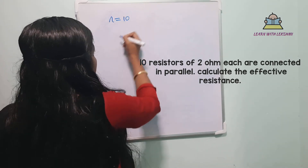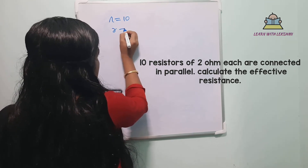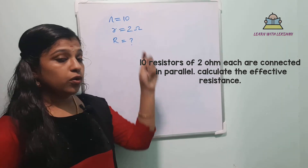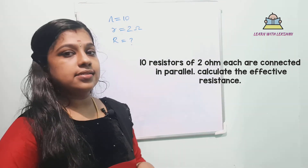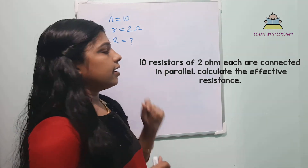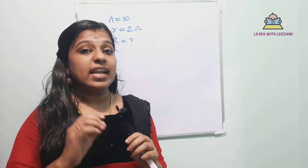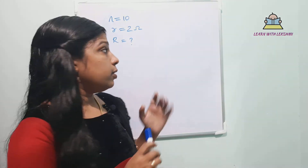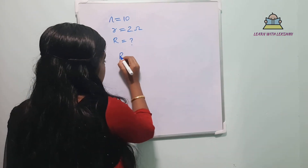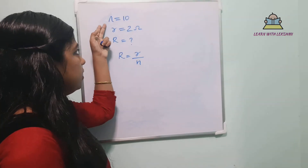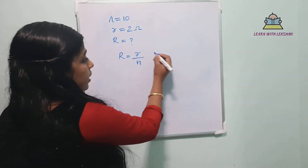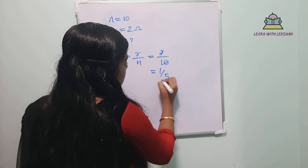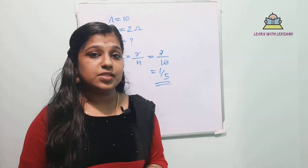Next question: Ten resistors are connected in parallel, and resistance of each resistor is 2 ohm. Calculate the effective resistance. We have 10 equal resistors connected in parallel. Using the formula R effective = R by N, we substitute: R = 2 by 10. Therefore effective resistance is equal to 1 by 5 ohm.